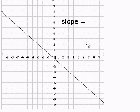Given the graph, find the slope. To find a slope, we must understand that a slope of a line is defined as rise over run.